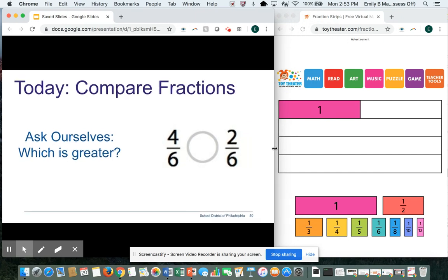I notice that both of these fractions have a 6 in the denominator. So I'm going to look at my 1 sixth unit fraction. I'm going to use it to build 4 sixths. So 1, 2, 3, 4 sixths. There, in that row,